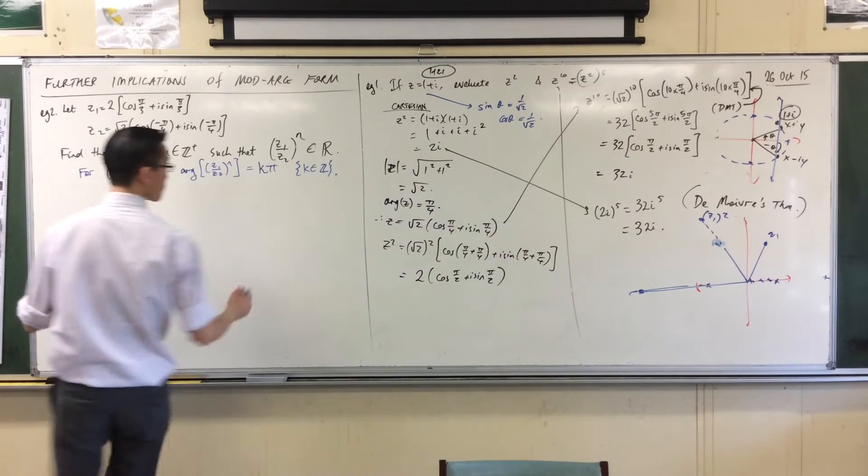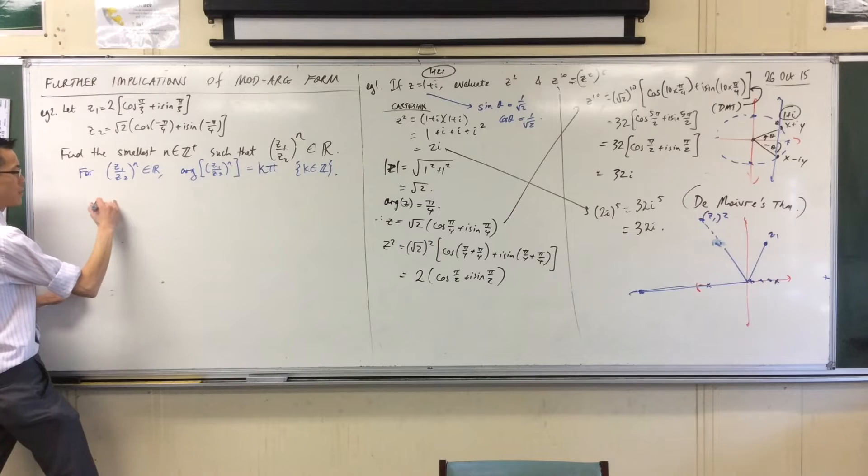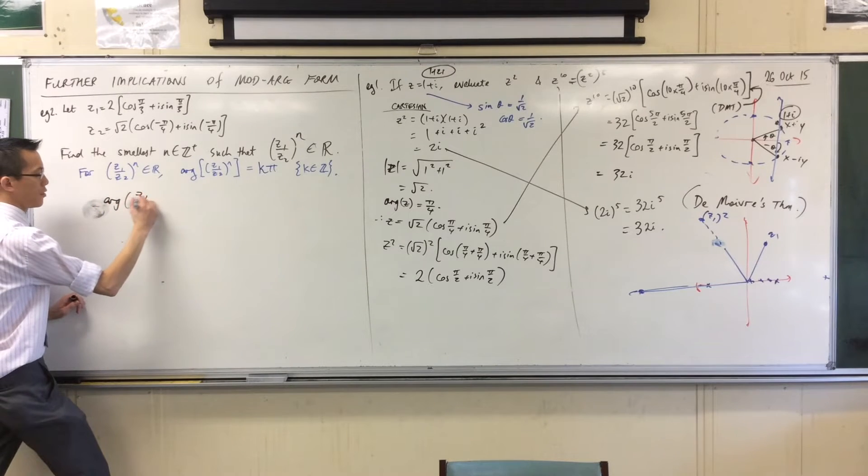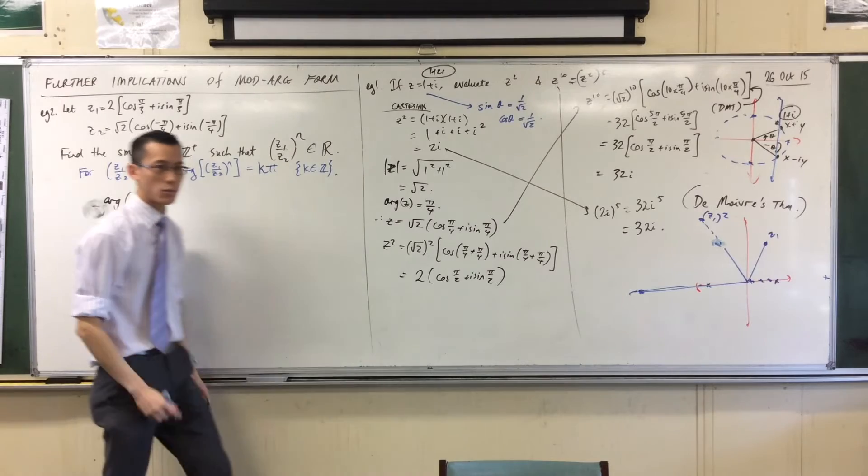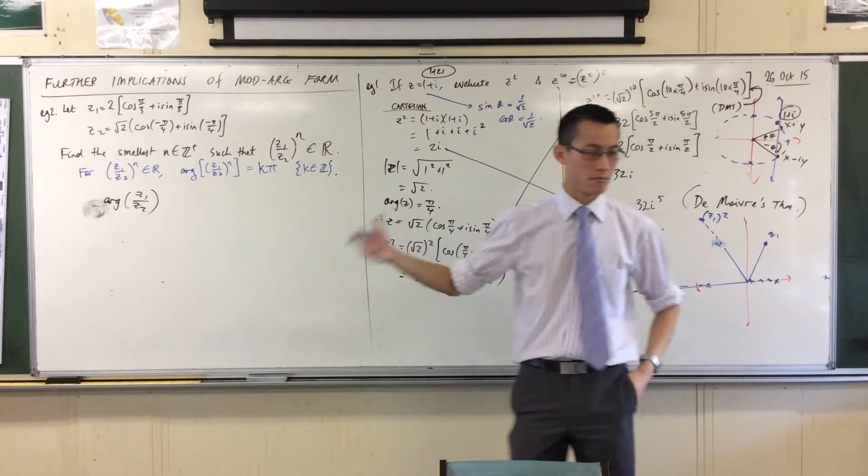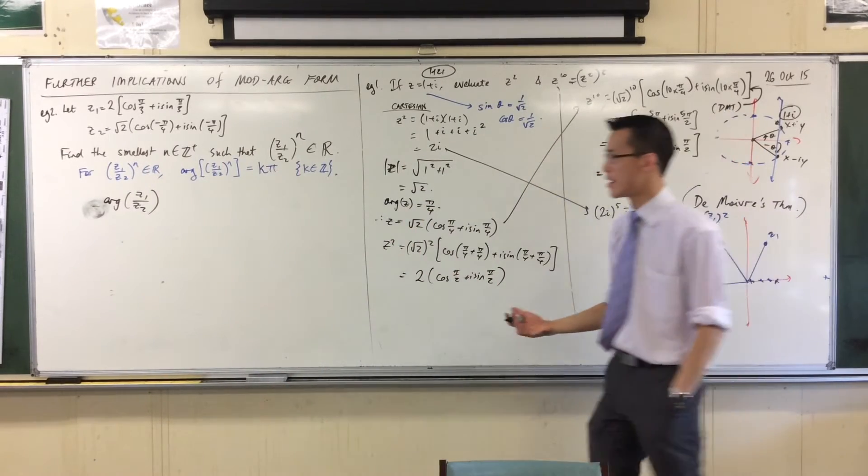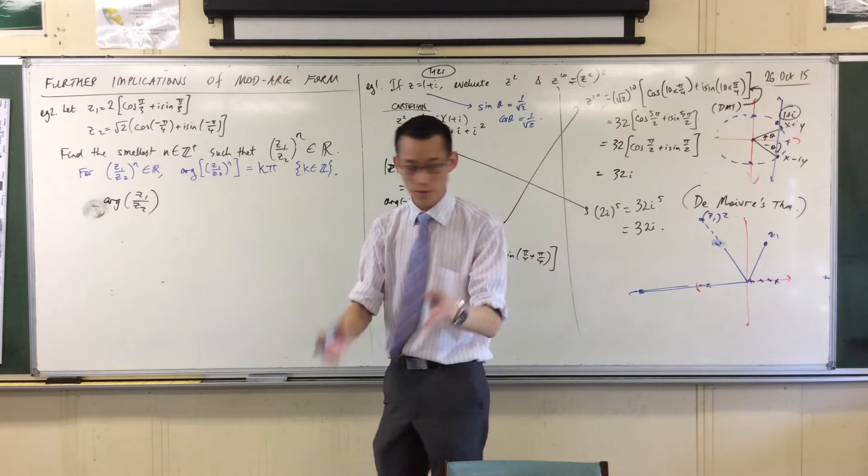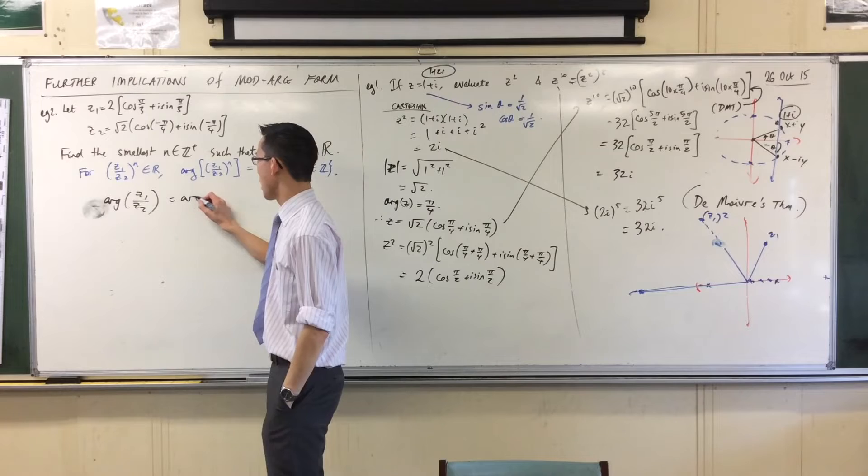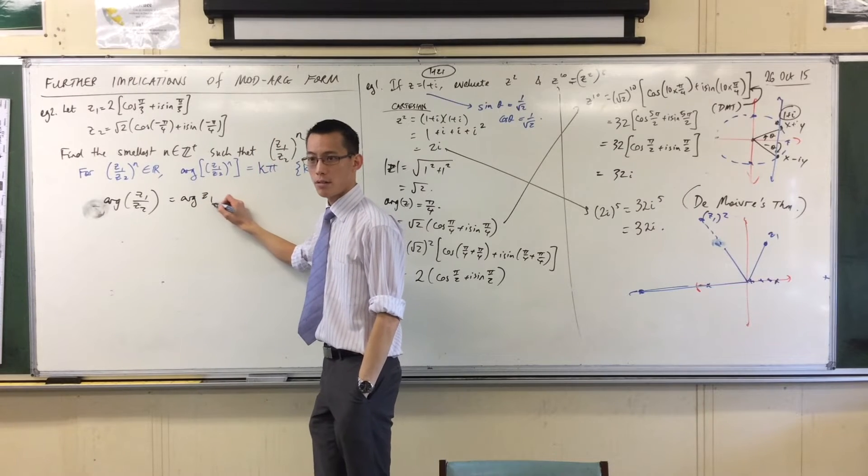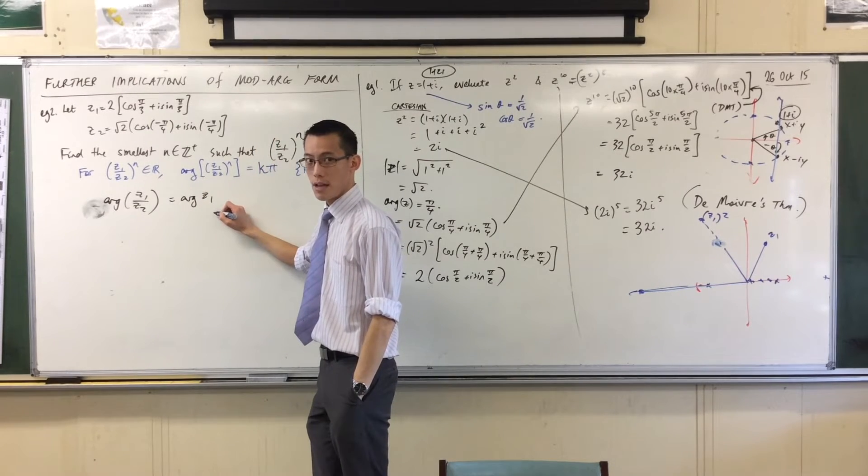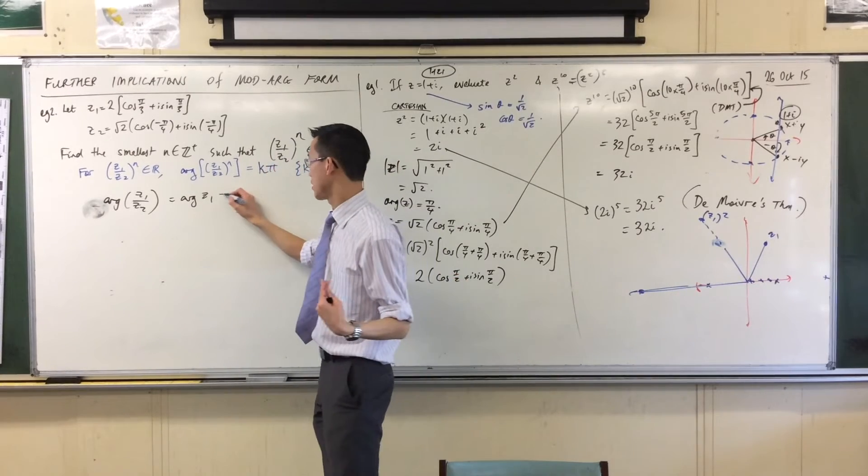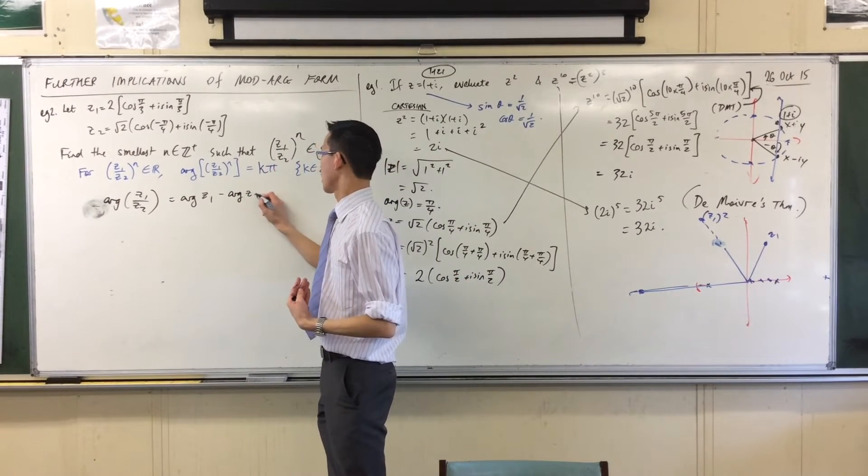So, let's say this. What is the argument, what is the argument of, just before we raise the power, what's the argument of the, just the first time we drew the quotient? Well, the quotient means subtraction of angles, right? Because multiplication means the addition of angles. So, this is going to be arg z1, now I'm dividing, so I'm going to subtract the other argument.